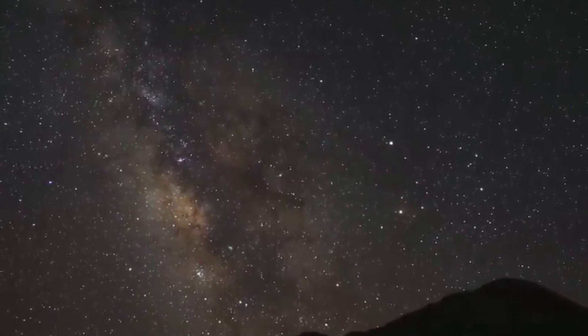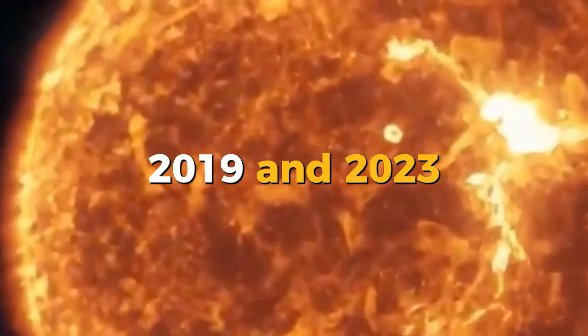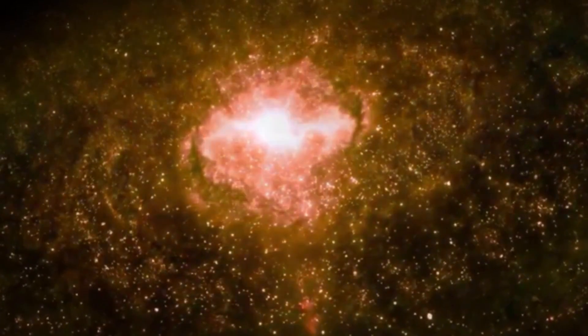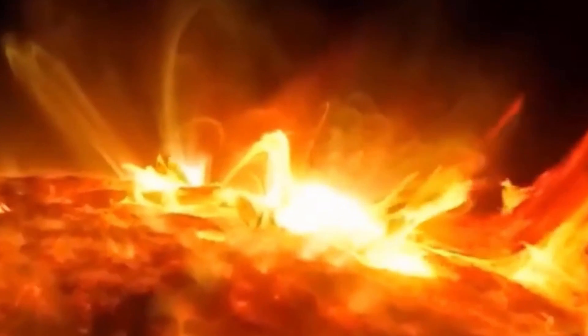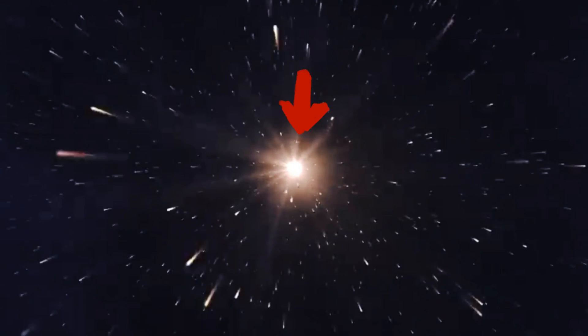Betelgeuse, a red supergiant, is not your average star. It's a remarkably bright celestial body, shining more than 100,000 times brighter than our sun. Situated about 650 light years away in the Orion constellation, it holds significance not just for its luminosity, but also due to its rich history and cultural importance.